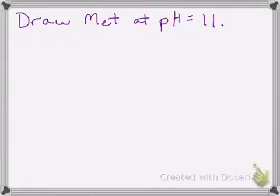In this video, we're going to look at drawing amino acids at different pHs. The underlying concept is that functional groups on amino acids become protonated and deprotonated based on the pH of the solution, and the factor involved is understanding what pKa is. So let's take a question: draw methionine at pH 11. Take a moment to draw it at pH 11, and then I'll go through the mental process of how I would draw this.